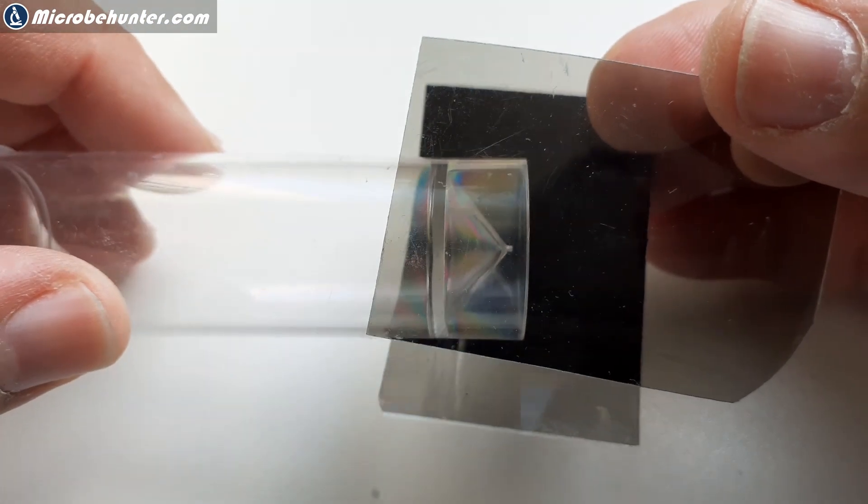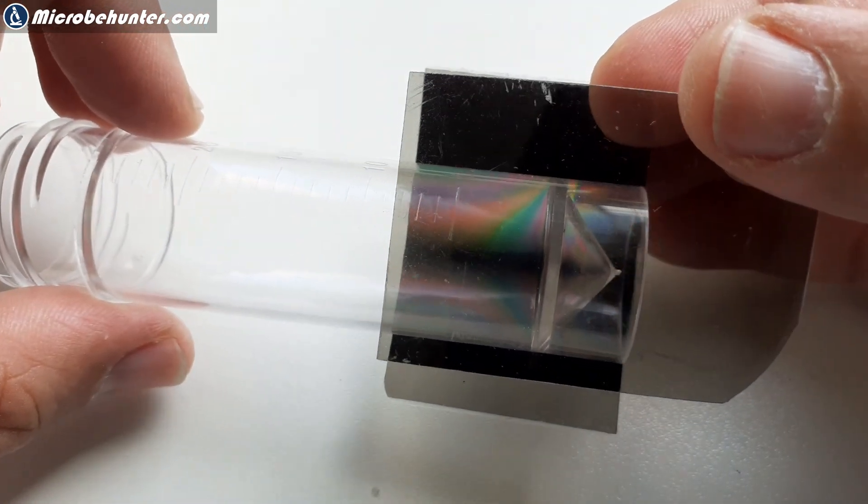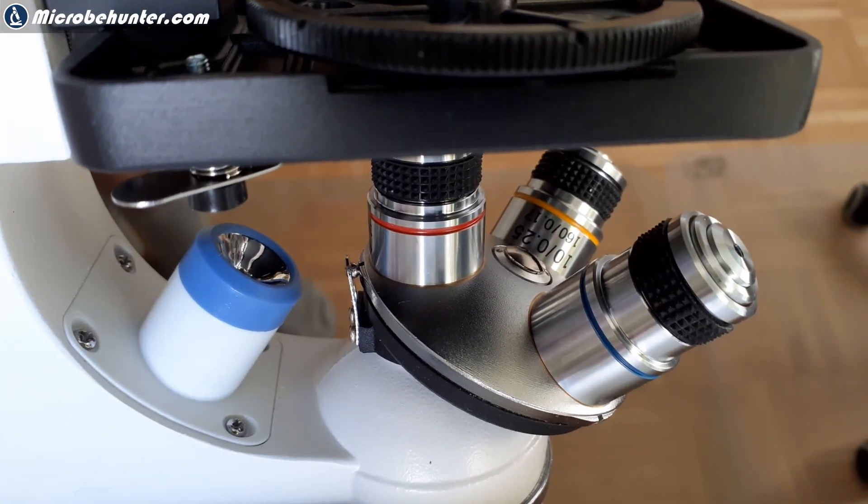If you put some plastic in between those cross polarizing filters then you can see that there are these rainbow colors. It actually shows that the plastic is also kind of depolarizing the light a little bit. It shows that it actually works.